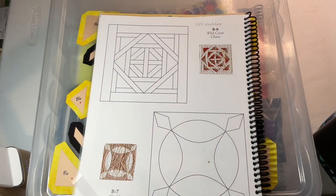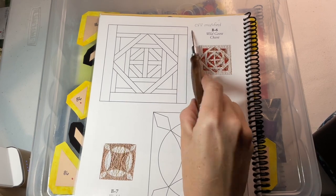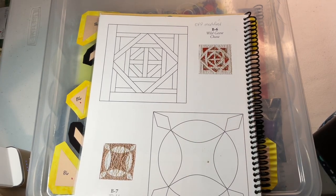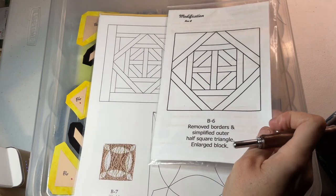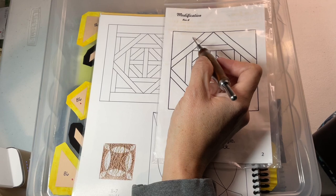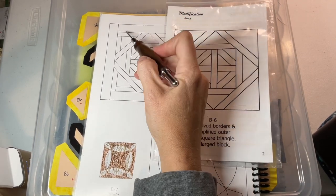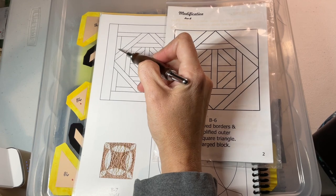Now we're going to assemble the B6 block. B6 is a modified block for the EPP kit. We're going to go to the chart in the booklet. In here they've taken out this border and they've also simplified these corners after they made the block bigger.